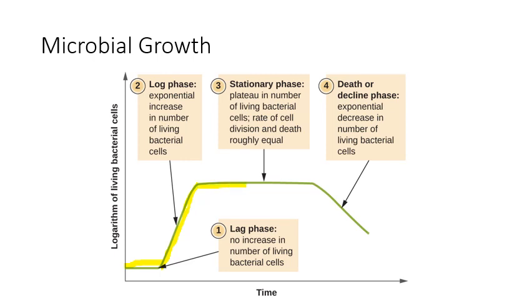Phase three is the stationary phase, where we're starting to use up the nutrients available in the media and some cells are starting to die. Reproductive rates are essentially equaling death rates — if we're bringing on just as many new cells as we're losing old cells, we don't have an overall increase in population, just a stable population. Then stage four is the death phase, where the population is in decline, meaning there are more cells dying than new cells being generated.